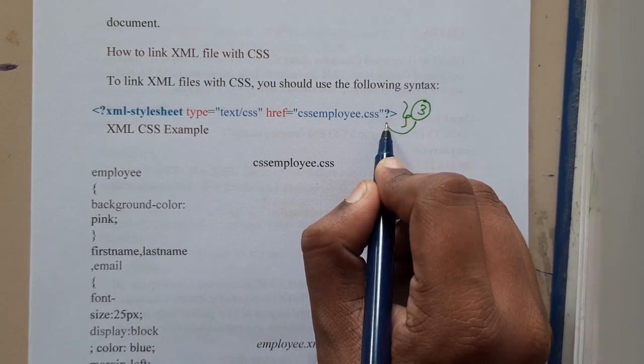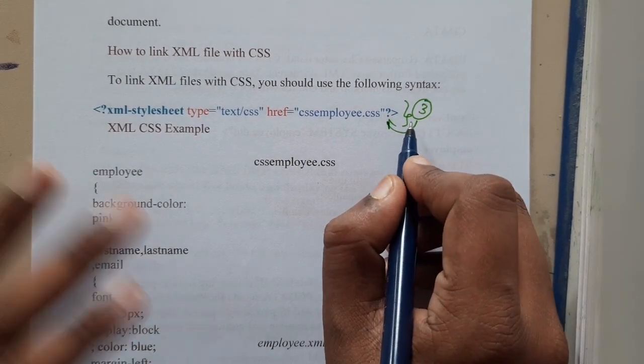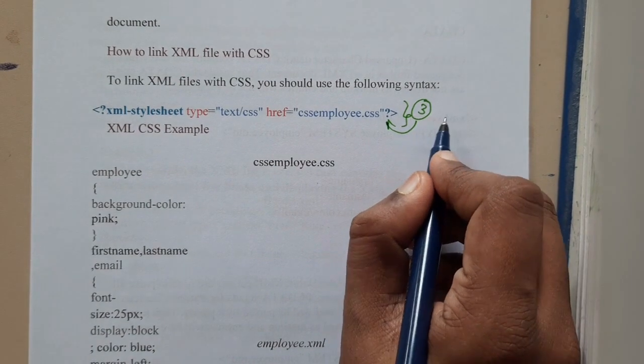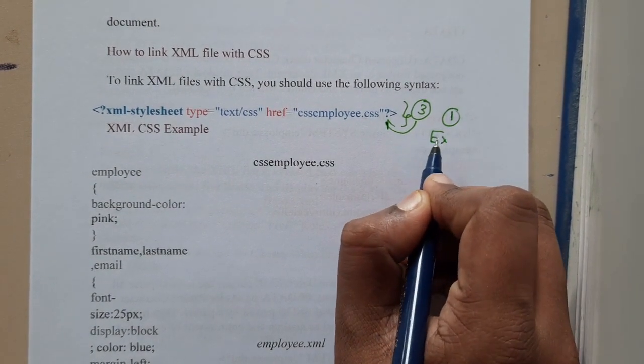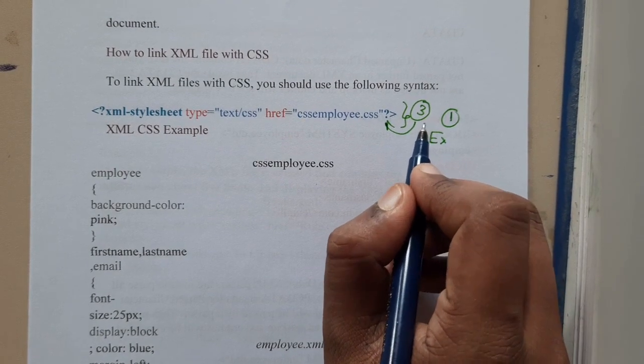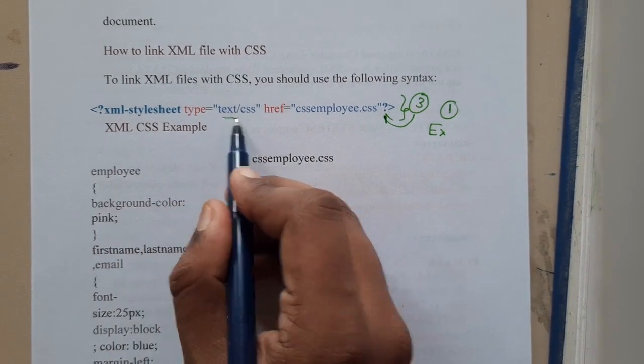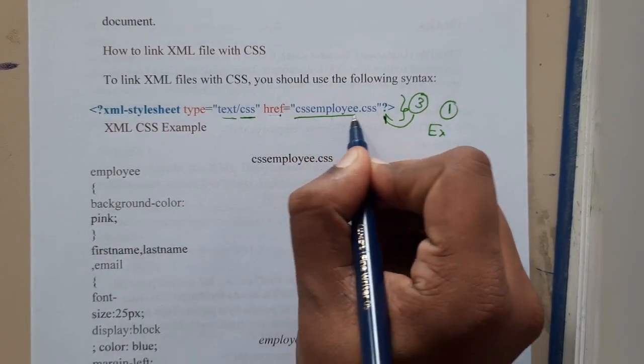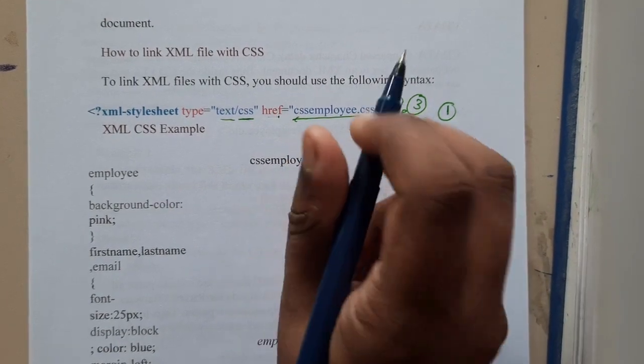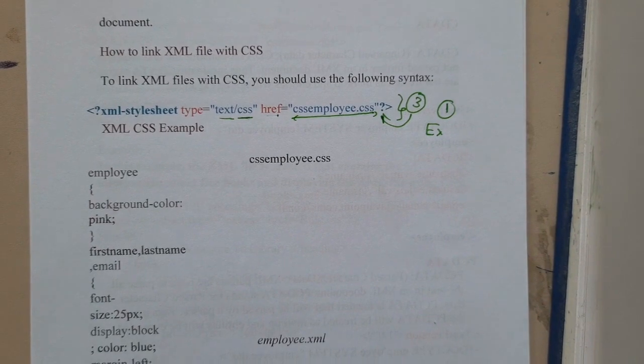Similarly, three different ways can also be used here, but we will be using the external adding CSS as the best method. You will be writing question mark XML stylesheet type equals text CSS, href the name of the file, and closing it. In this way we will be connecting the files.